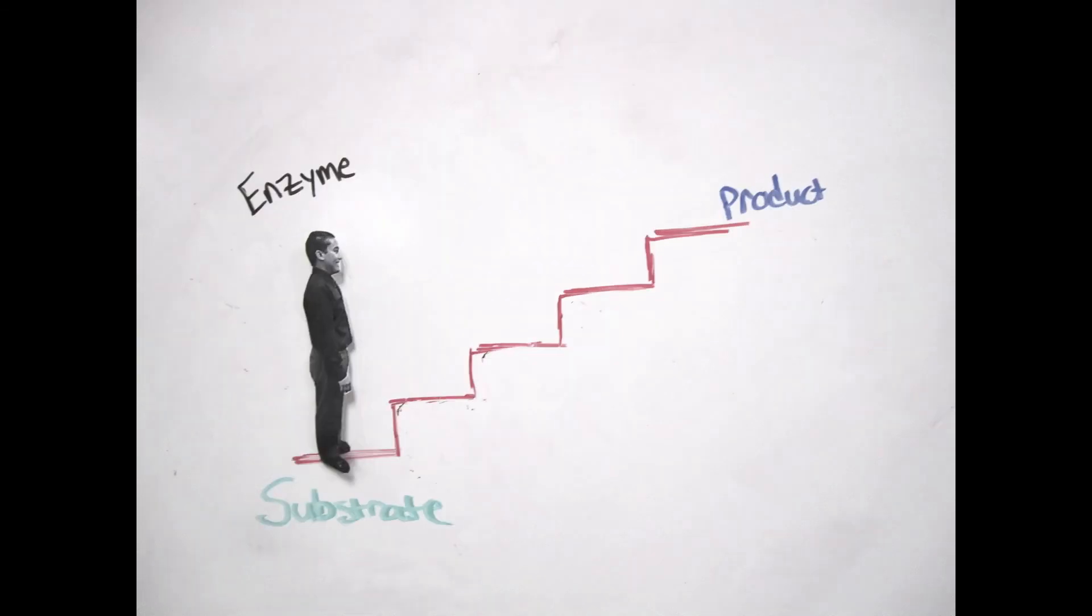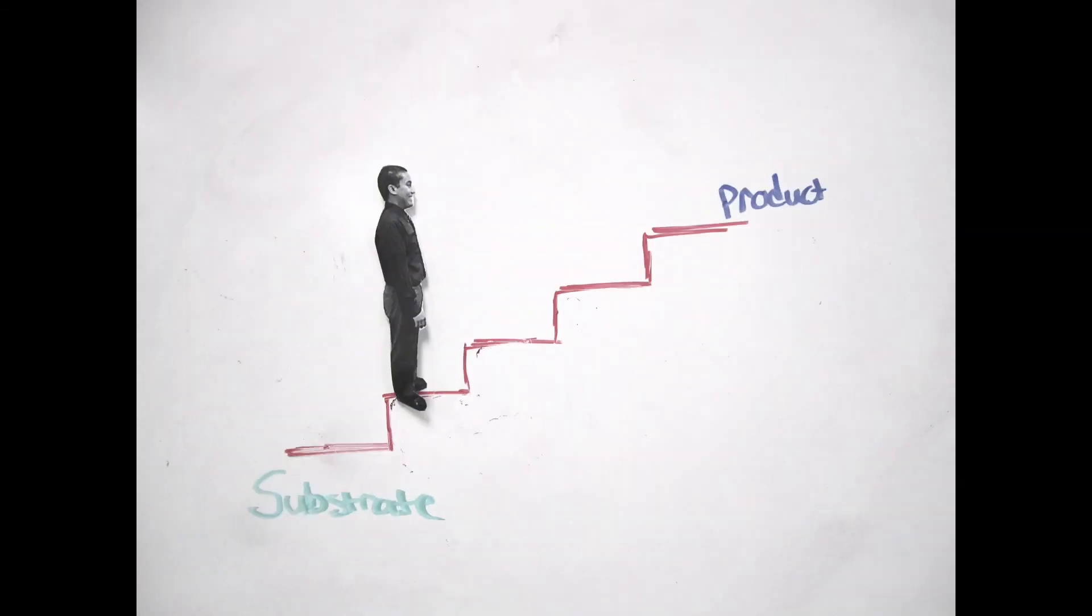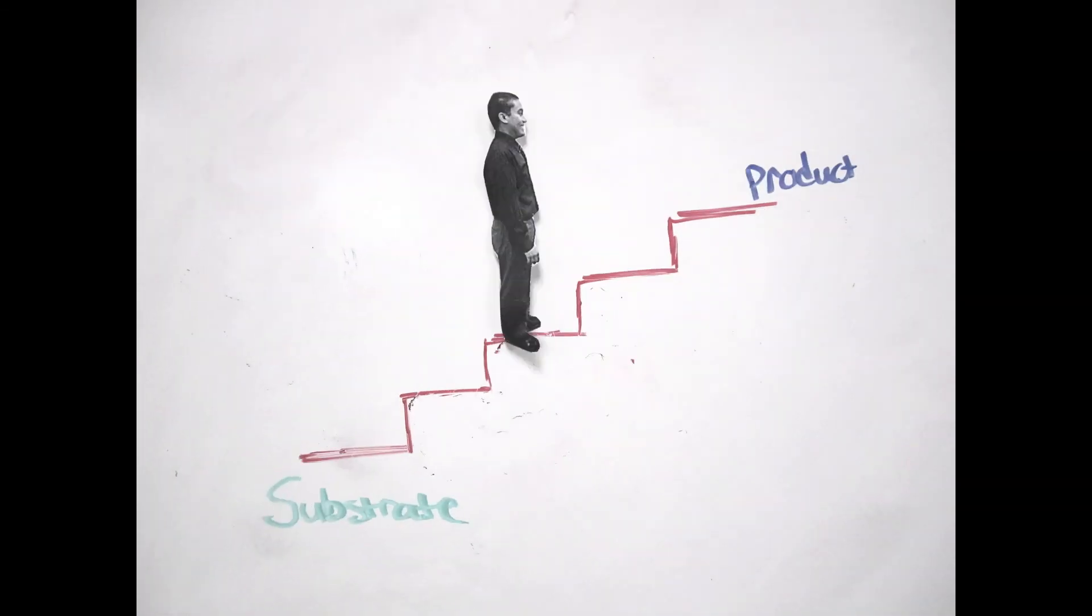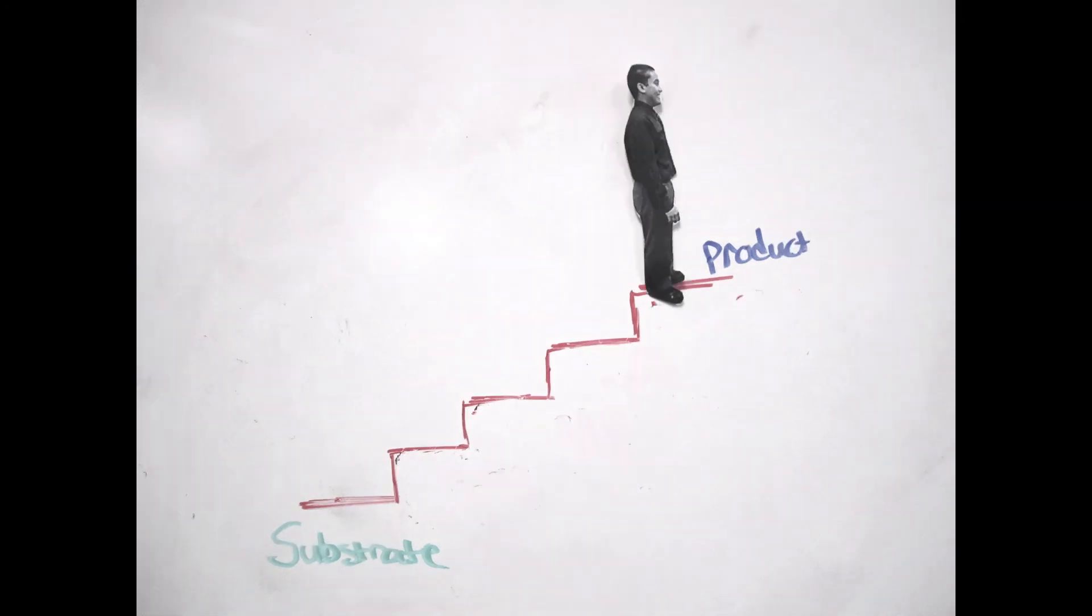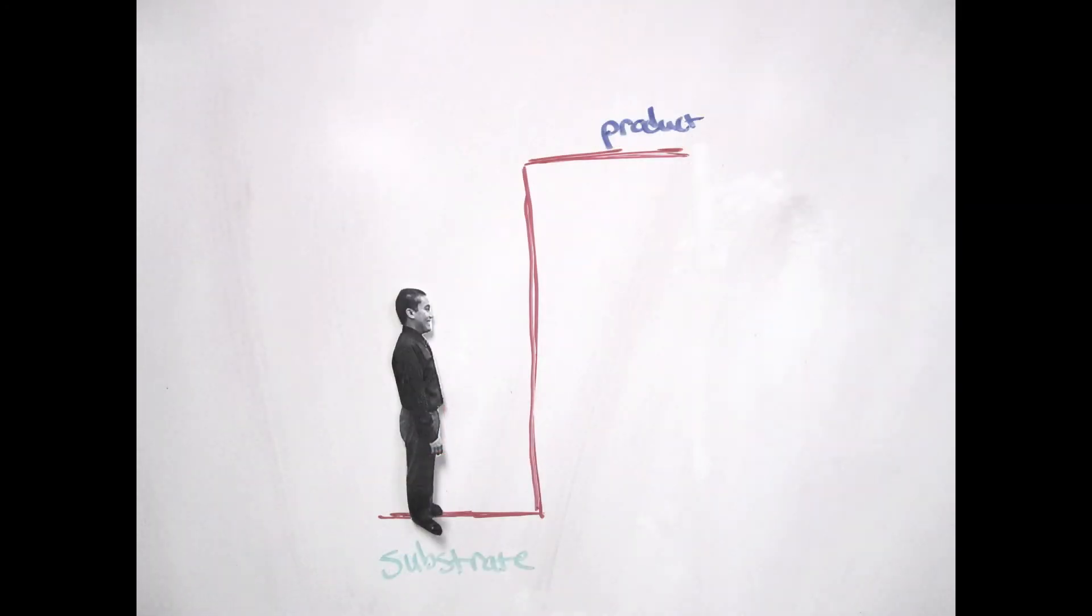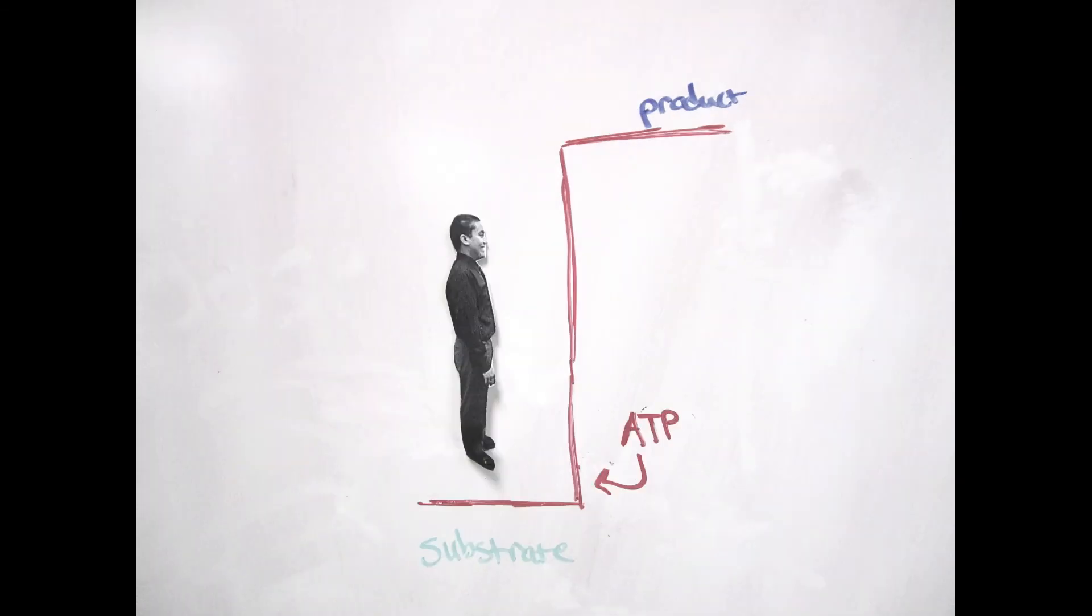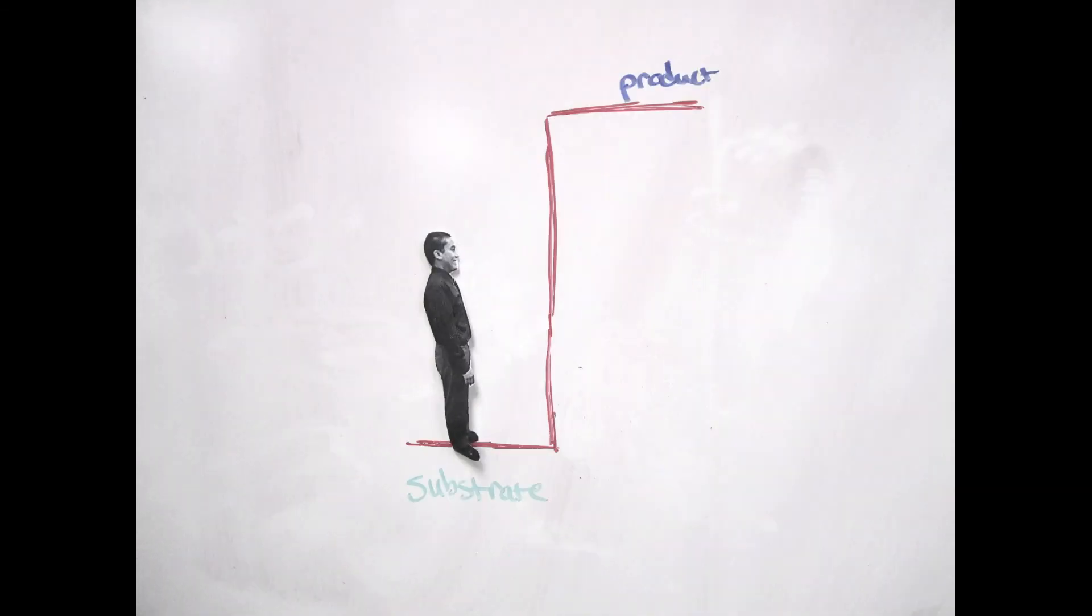Why do enzymes work in a series of small steps? By working in a series of small steps, the cell is able to have a much higher level of control over the reaction. Enzymes normally use ATP to power steps like the enzyme substrate complex, but ATP is not big enough to power large modifications to the substrate.